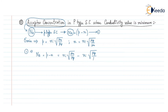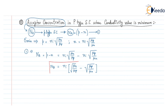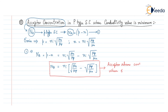Taking Ni as common, the expression becomes Na equals Ni times the quantity square root of mu_n over mu_p minus square root of mu_p over mu_n. This equation gives the value of the acceptor concentration, or the acceptor atom concentration, when the conductivity value sigma is minimum.